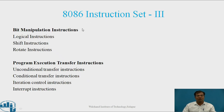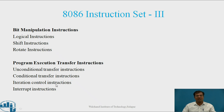We focus on two main types of instructions: first, bit manipulation instructions; second, program execution transfer instructions. Under bit manipulation instructions there are three types: logical instructions, shift instructions, and rotate instructions. Under program execution transfer instructions there are four types: unconditional transfer, conditional transfer, iteration control, and interrupt instructions.